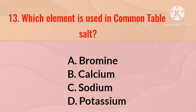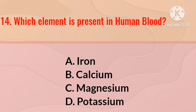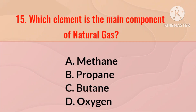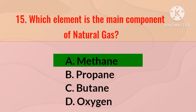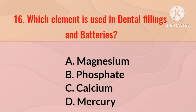Which element is found in common table salt? The right answer is sodium. Which element is present in human blood? The right answer is iron.